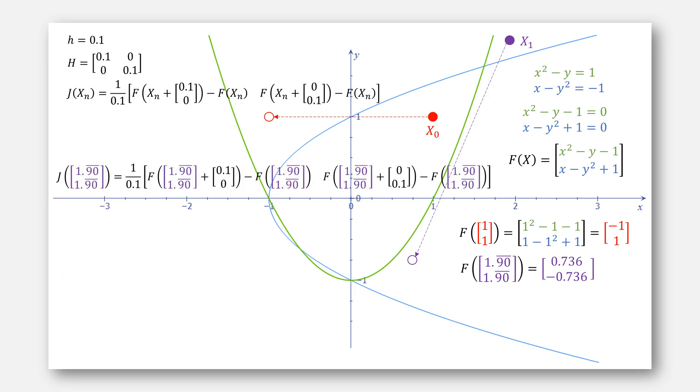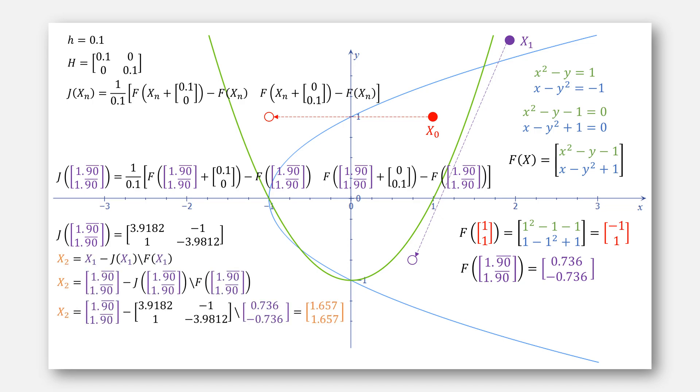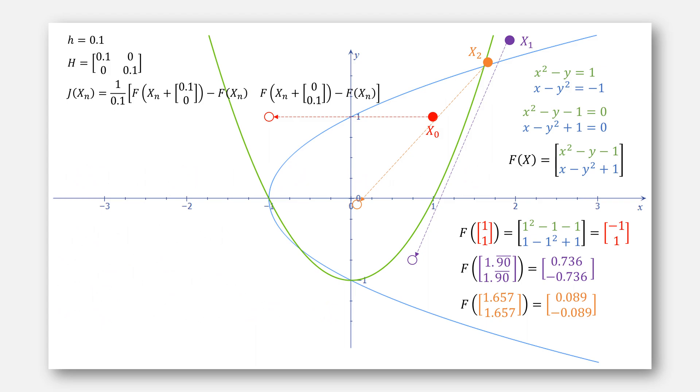We then use x₁ in our new estimation for the Jacobian, giving this solution, which when plugged into Newton's method as before, gives our next value for x₂ to be 1.657, 1.657. When we plot that value, we get a number that is very close to zero.